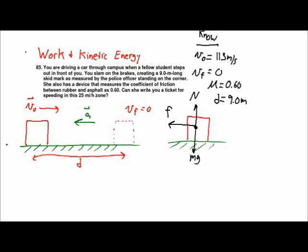So here we have a situation where a car is stopping in order to not run into a student and there's some information about the motion that's given. Basically the point of the problem is to try to prove to the police officer that we were not speeding.